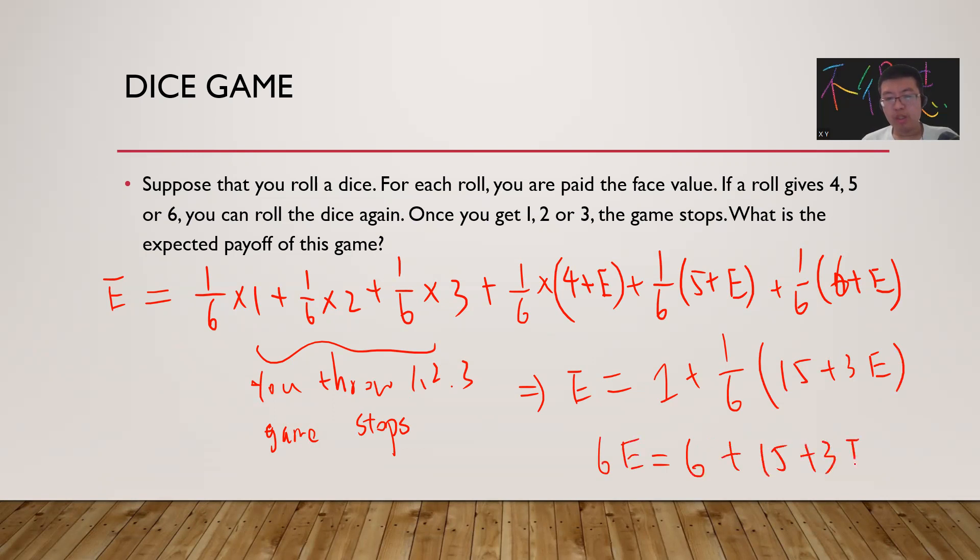So 3E equals 21, which means E equals 7. Yeah, so that's the result.